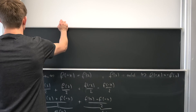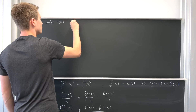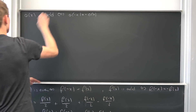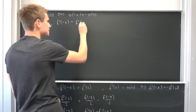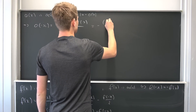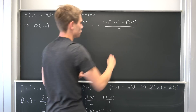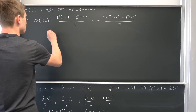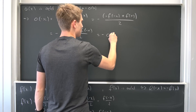Same procedure for o of x, the odd part. So the statement is: o of x is odd. The equivalent condition is that o of minus x equals minus o of x. Just like before, we plug minus x in. So o of minus x equals f of minus x minus f of minus minus x, which is positive x, all over 2. Now we factor out a minus 1 in the numerator: we get minus times minus f of minus x plus f of x over 2. Interchanging the terms gives us minus times f of x minus f of minus x over 2, which is indeed minus o of x. So we have shown that o of x is an odd function.